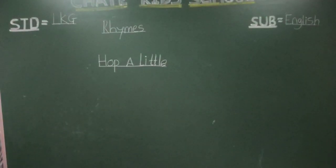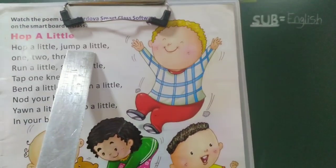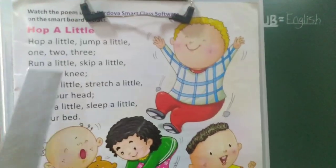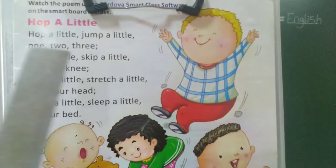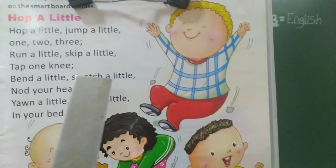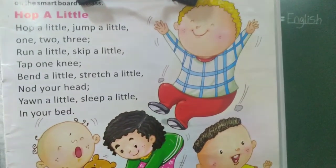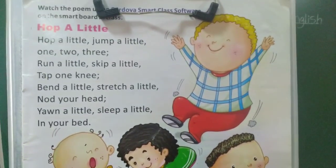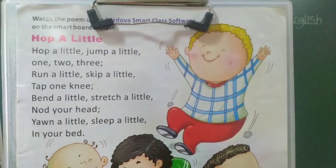Once again! Let's read the poem once more from the top. Hop a little, jump a little — one, two, three. Run a little, skip a little, tap one knee. Bend a little, stretch a little, nod your head. Yawn a little, slip a little, in your bed. You can read the poem now, okay students!